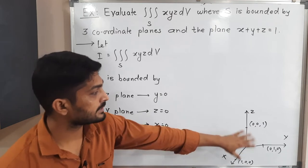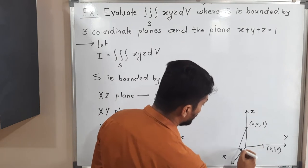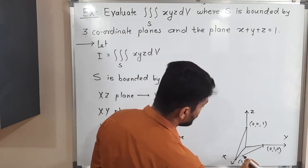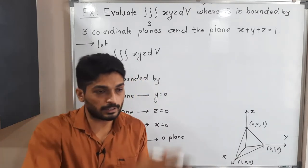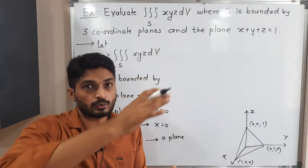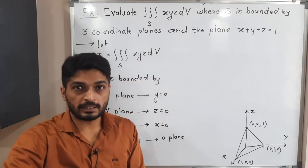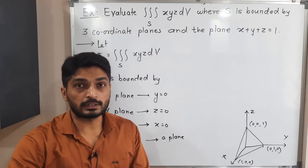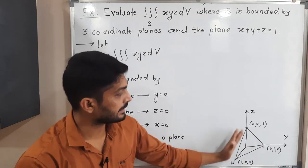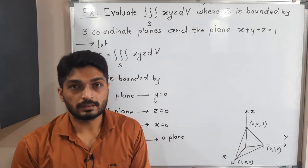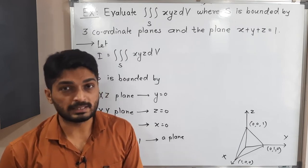The plane forms a triangular shape in the three-dimensional figure — it is a cross-plane cutting all three axes. So the region is bounded by four planes in total: x + y + z = 1, the xy-plane, the yz-plane, and the xz-plane. Now we have to find the limits.